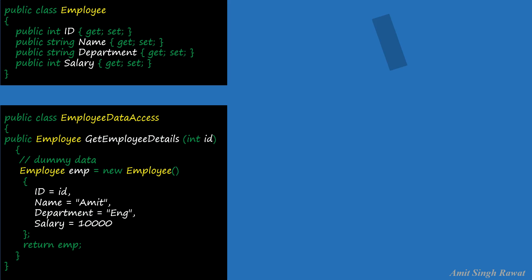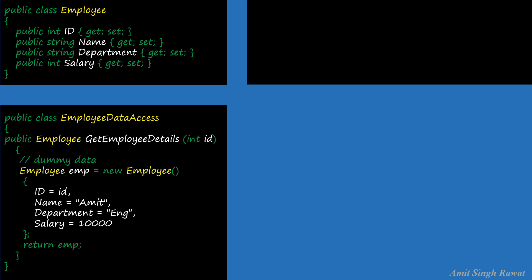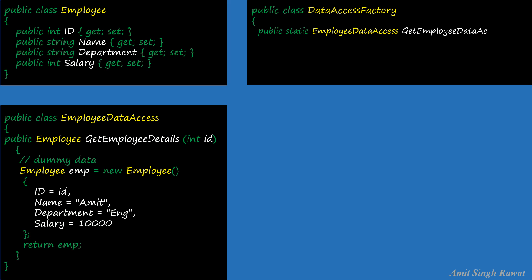The next class will be DataAccessFactory: public class DataAccessFactory. This class will have one static method responsible for returning the object of the class that fetches actual data from the target repository — which in our case is EmployeeDataAccess. So: public static EmployeeDataAccess getEmployeeDataAccessObj(), and that returns new EmployeeDataAccess. Our third class is also ready.